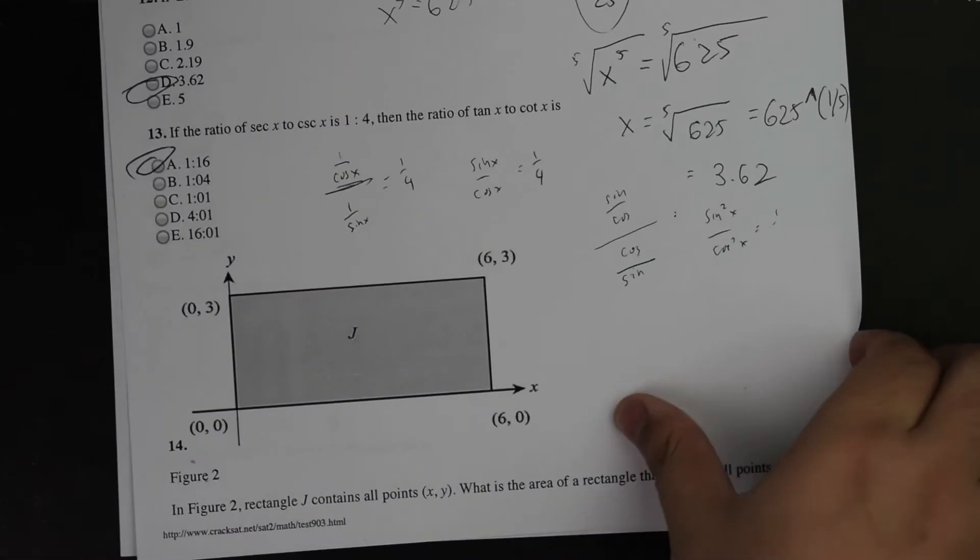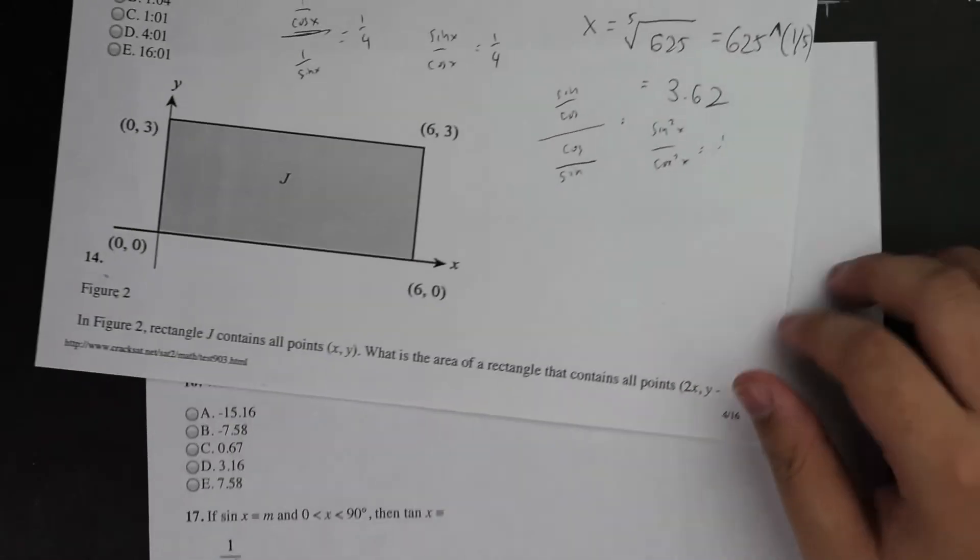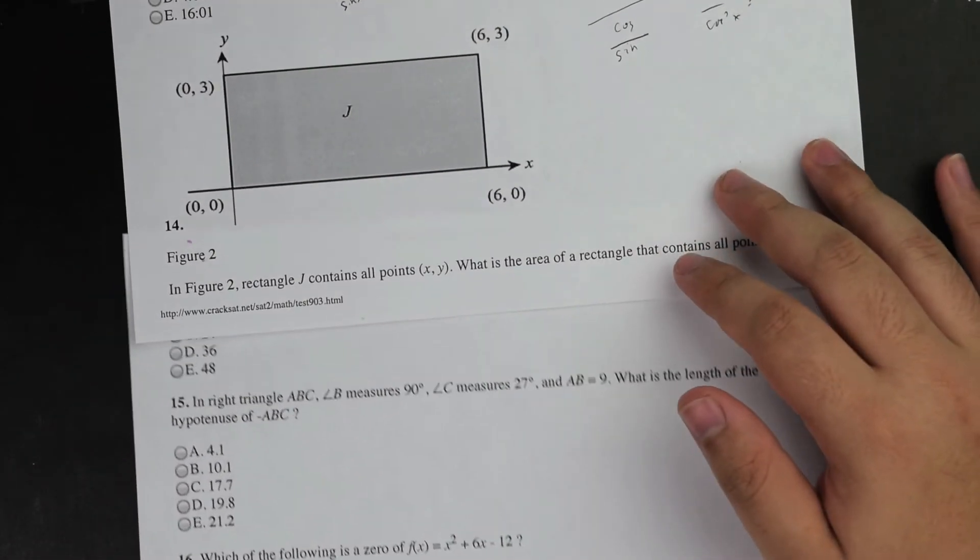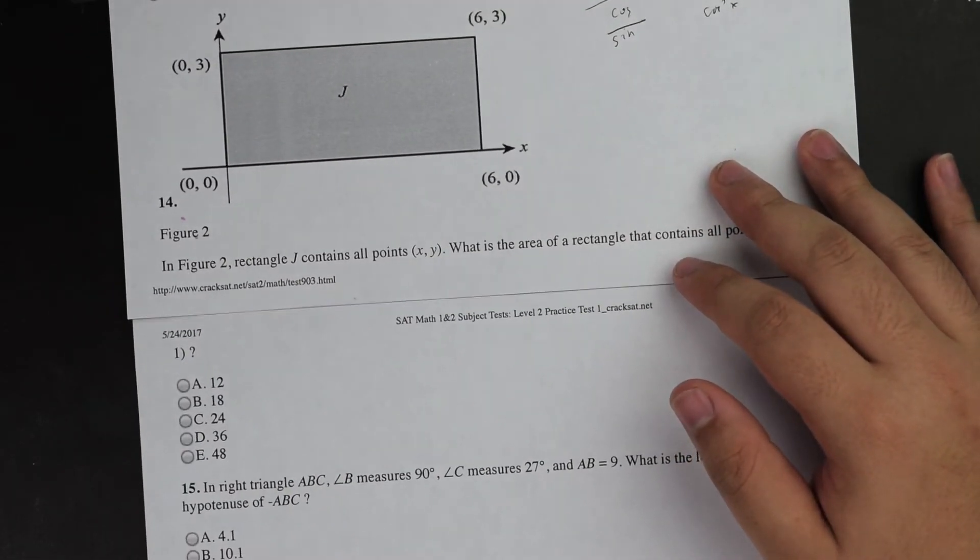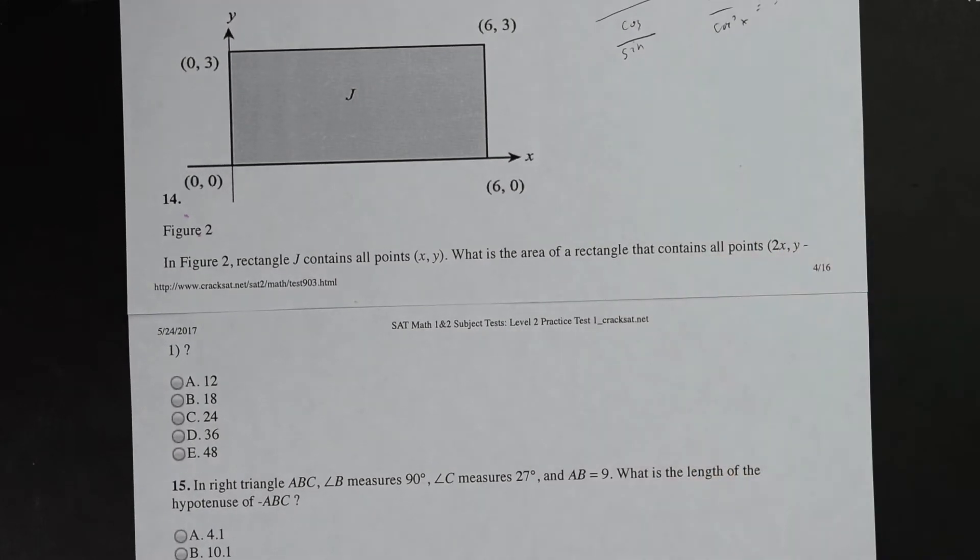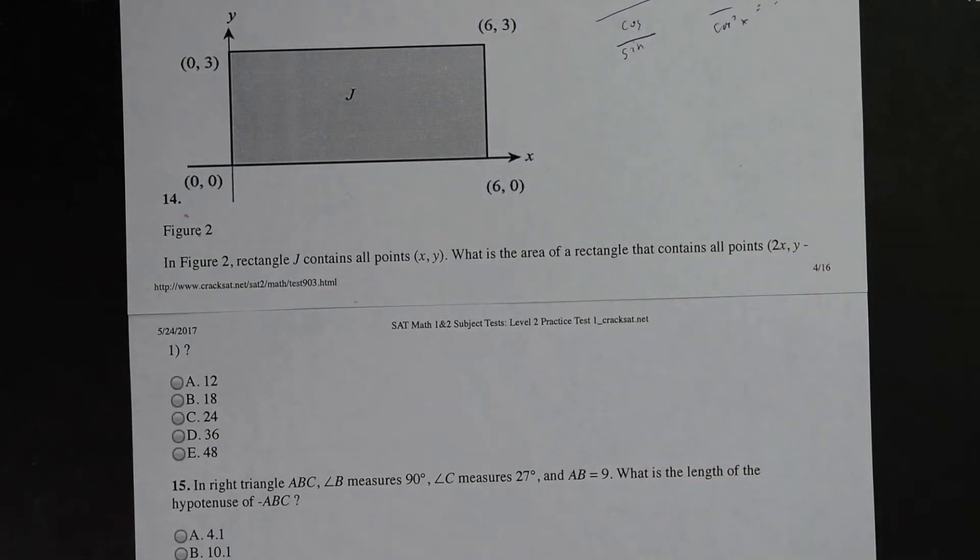Now we'll go ahead and continue. But before doing so, I do want to set this up so that you can see the problem properly. So number 14, in the rectangular 2 contains all points x and y. What is the area that contains that?